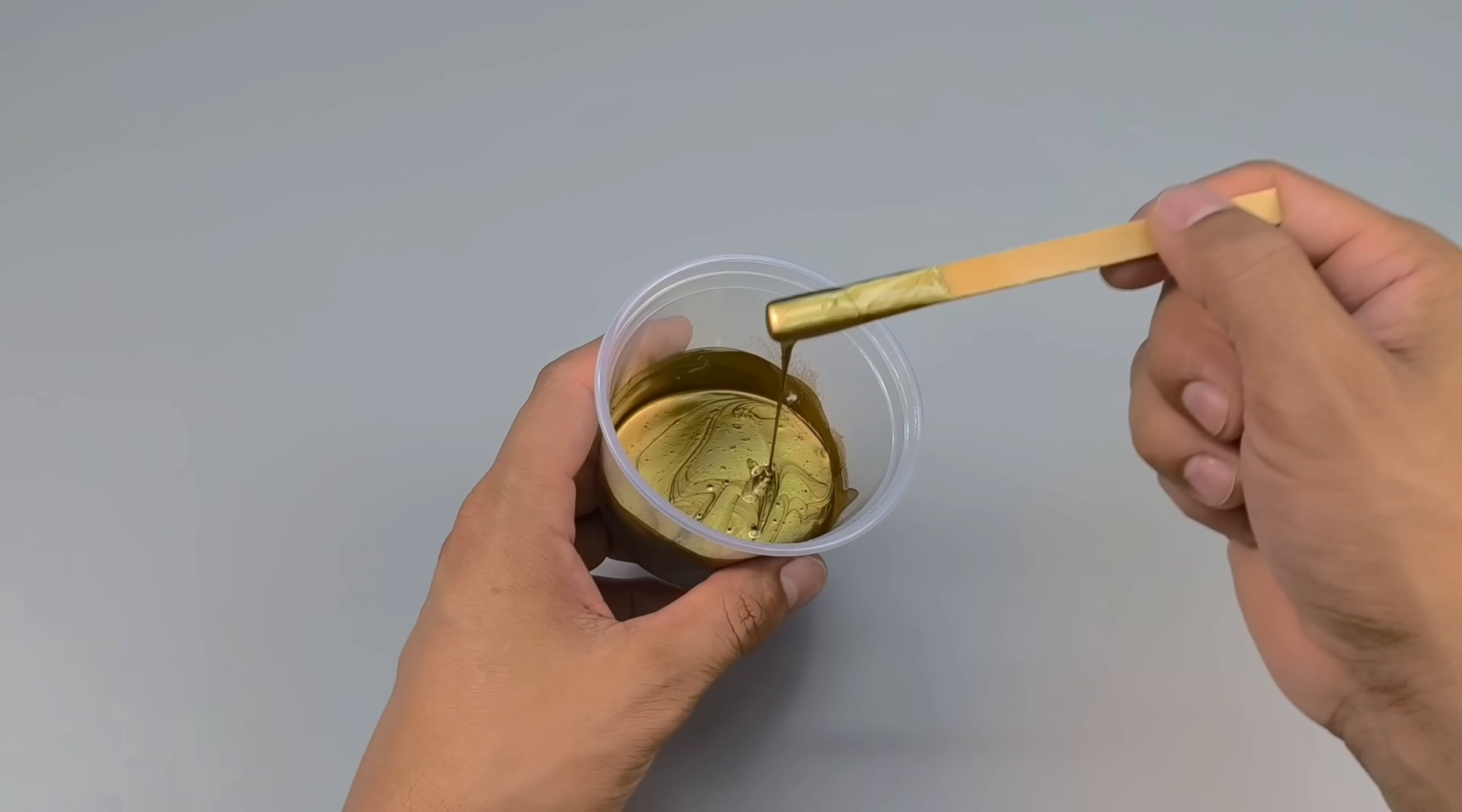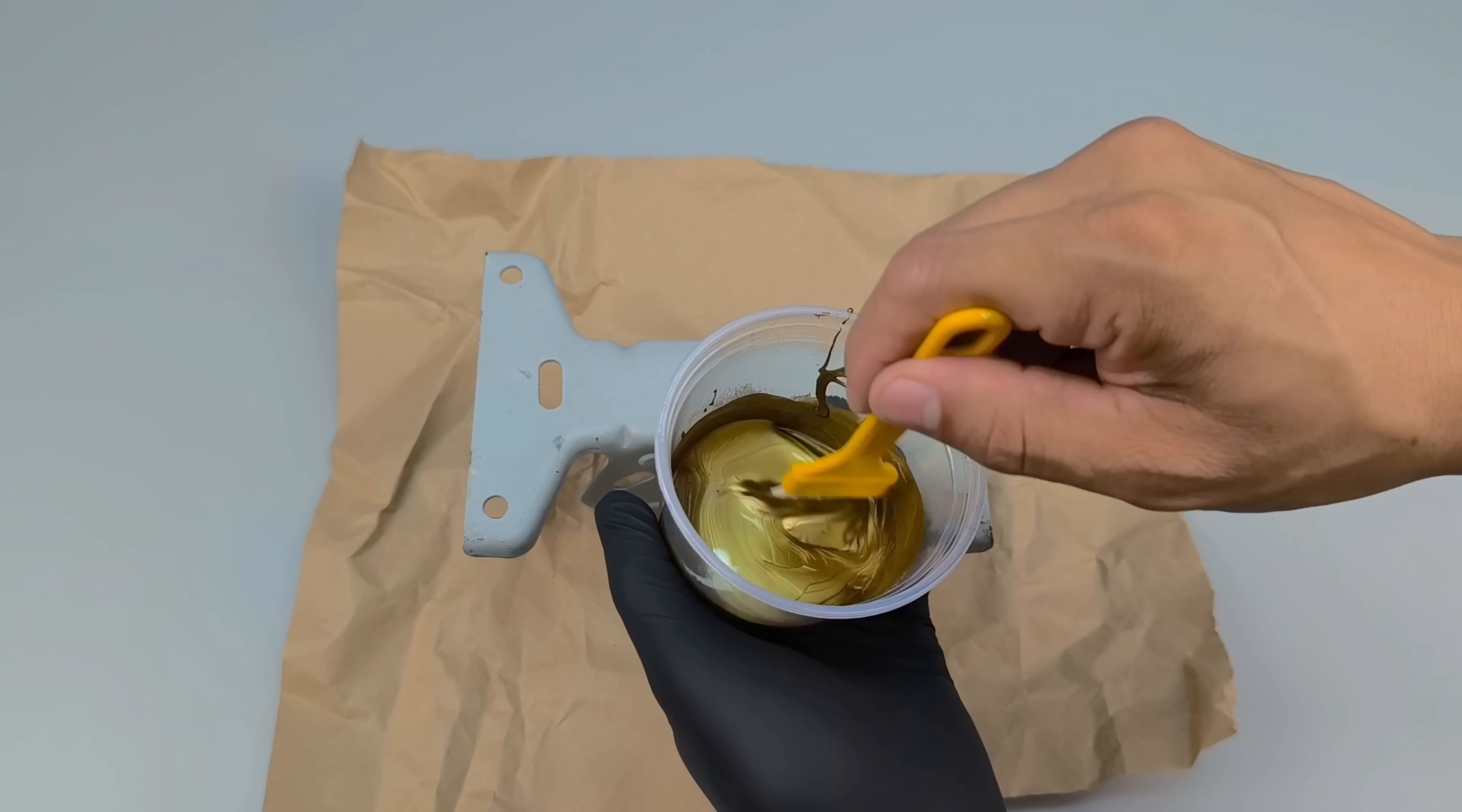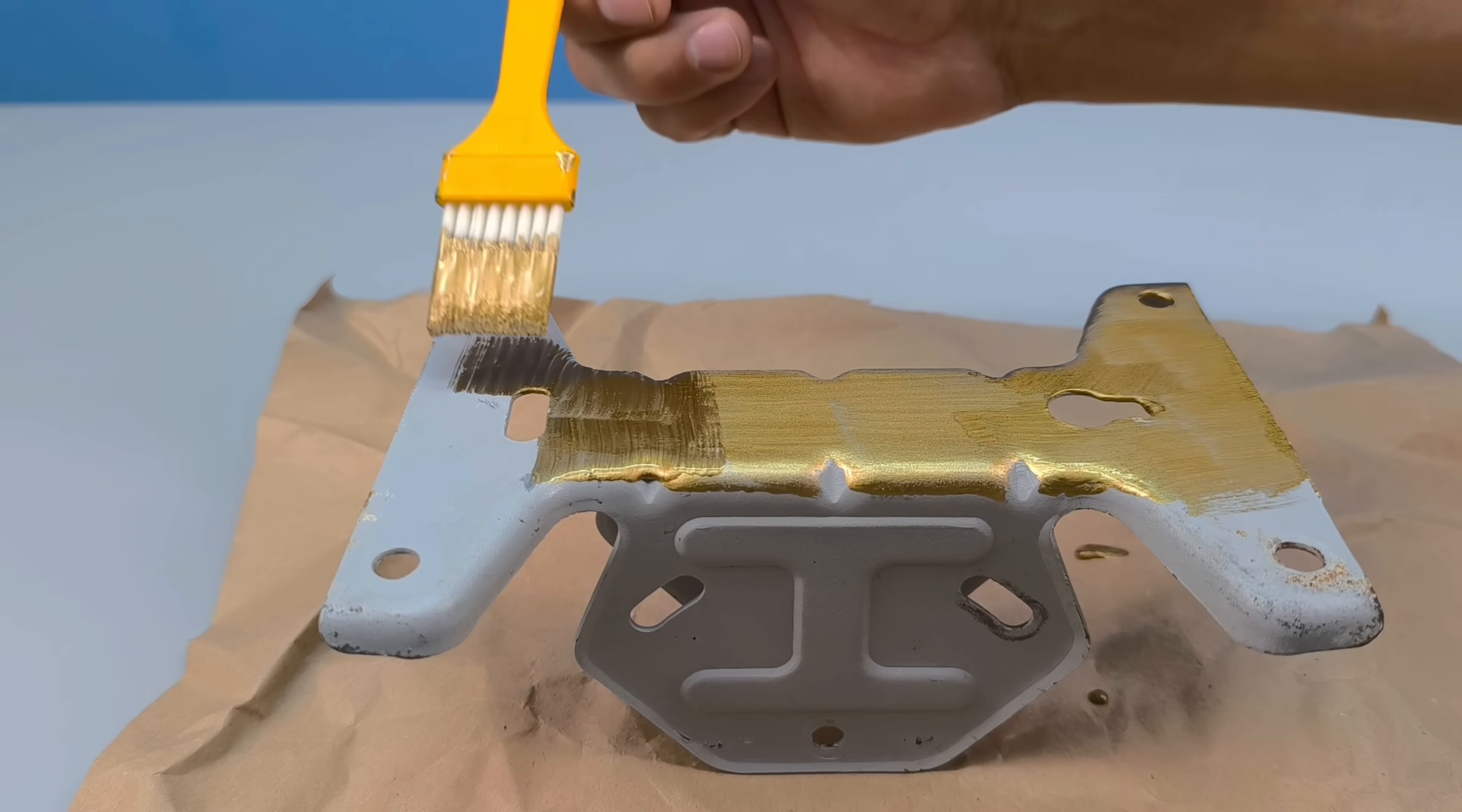Now the most anticipated moment has arrived: applying the metallic homemade paint. Right here in front of me is a piece of metal marked by time, with obvious signs of rust and wear. It is on this piece that this mixture will prove its effectiveness. Using a soft brush, I begin by applying the first coat, a thin layer, just enough to cover the surface and allow the product to penetrate the metal's irregularities.